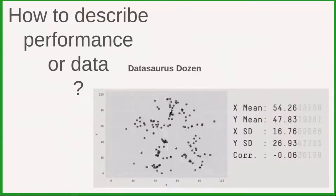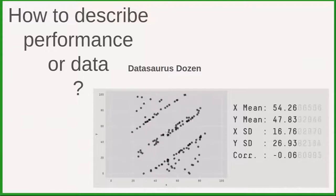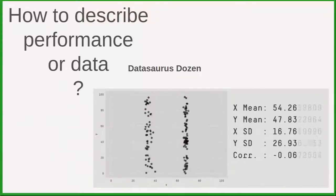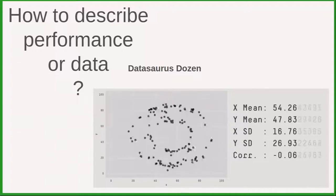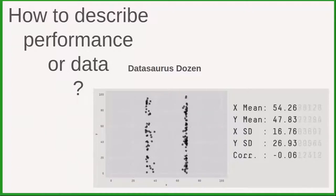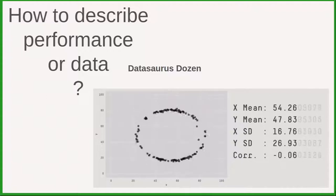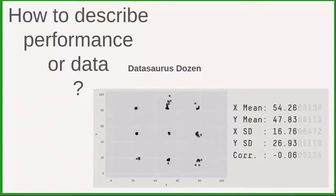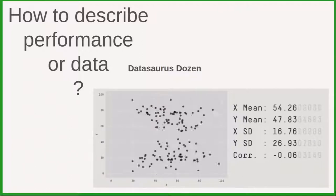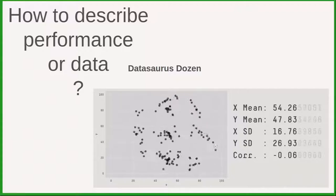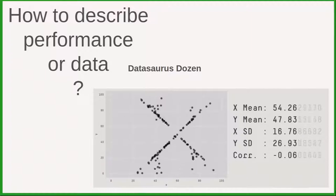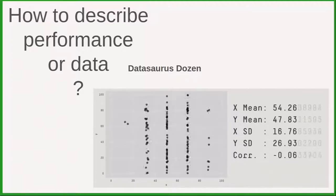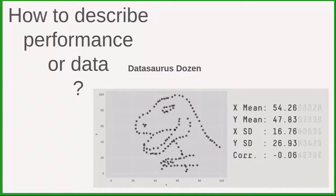Another example that is quite nice is the datasaurus. We have again two variables, x and y. The mean of these variables is just the same, the standard deviation is the same, and the correlation between the variables is also the same. But obviously they have a very different structure. Imagine you have a lot of variables that are not easy to visualize — in a situation where you have only one x and one y you make a plot and that's fine. But typically you use machine learning to approach problems that are much more complicated than that.